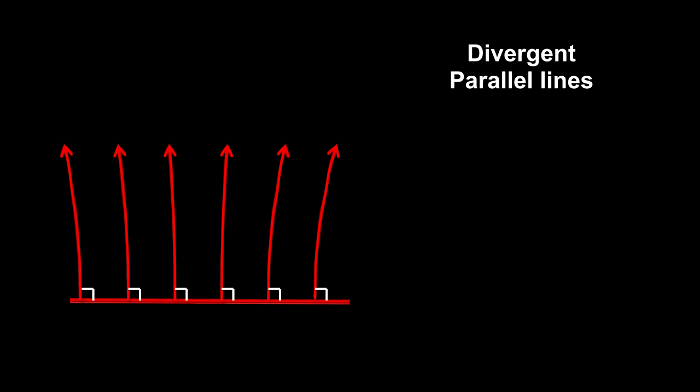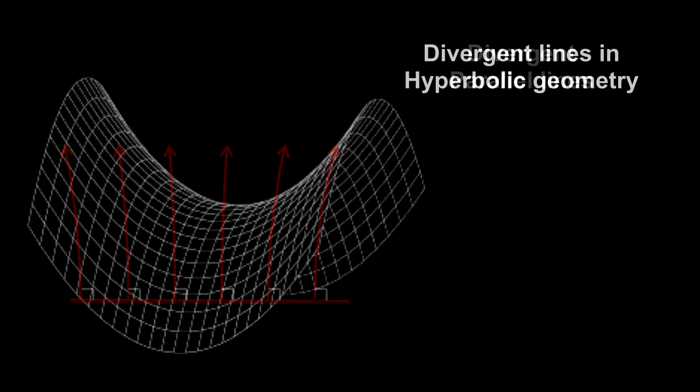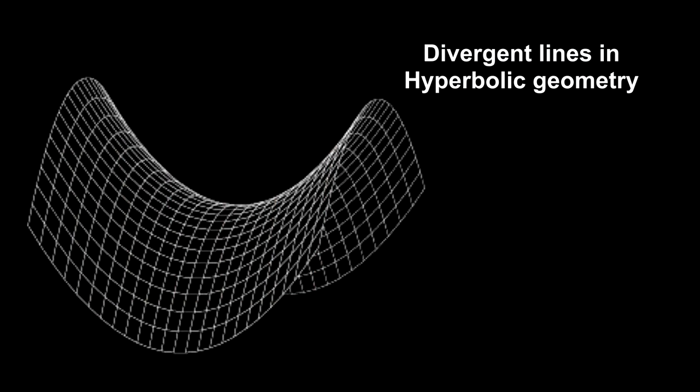One possibility for a geometry supposes that the parallel geodesic lines are diverging, getting further apart. It is as if space were being stretched between the lines. And the further up the lines you go, the more the space is stretched. The best example of this is the surface of a saddle, or a potato chip.